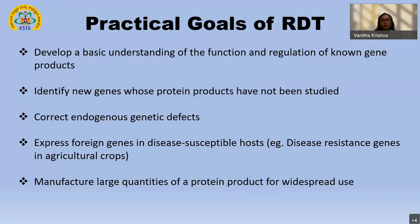The second important aspect achievable through RDT is identifying novel genes altogether which have not been touched upon at all — essential for progress in medicine and treatment. The third aspect is correcting certain endogenous genetic defects, for example sickle cell anemia. The fourth aspect is expressing novel or foreign genes in disease-susceptible hosts — for example, making an agricultural crop resistant to a particular disease or able to grow in unsuitable conditions.